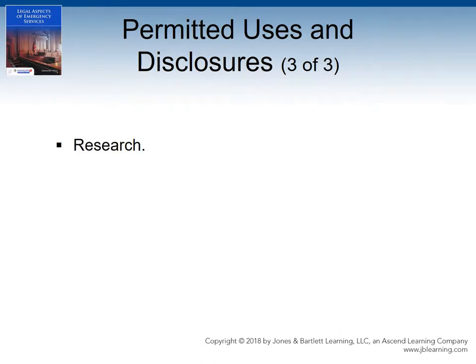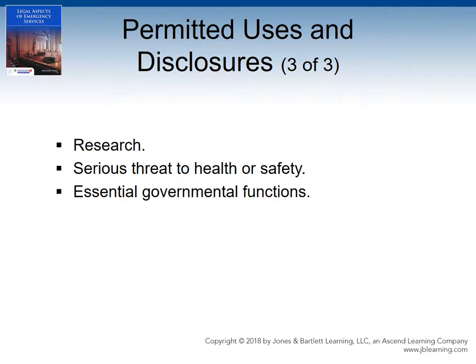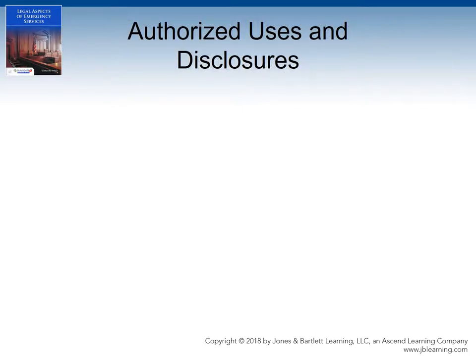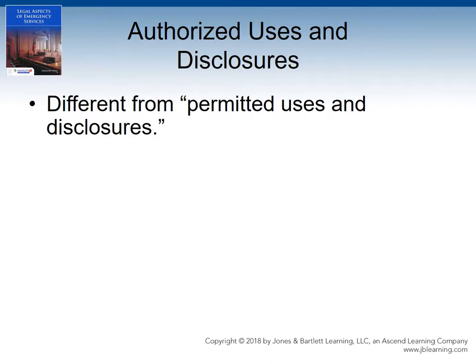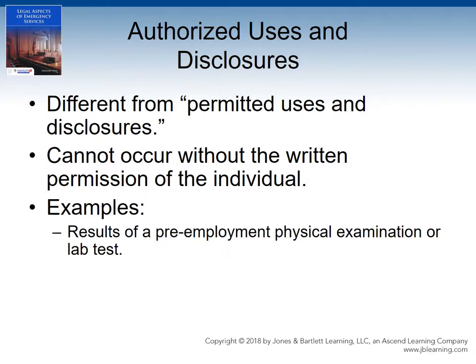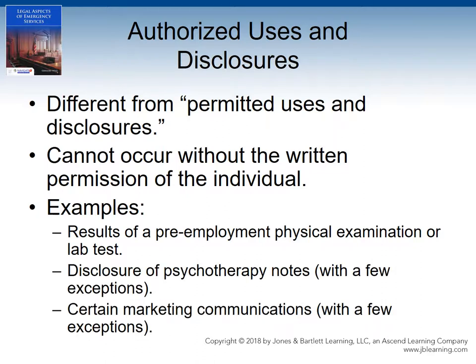Additional permitted exceptions include: for research purposes, when there is a serious threat to health or safety, and some essential governmental functions, for the purposes of complying with workers' compensation laws, or in cases where research, healthcare operations, or public health purposes require access to a limited dataset of protected health information. There is also something in HIPAA called an authorized use and disclosure, which is different from a permitted use and disclosure. An authorized use and disclosure requires the written permission of the individual whose protected health information is being used or disclosed. Some examples include the results of a pre-employment physical examination or lab test, disclosure of psychotherapy notes, and certain marketing communications.